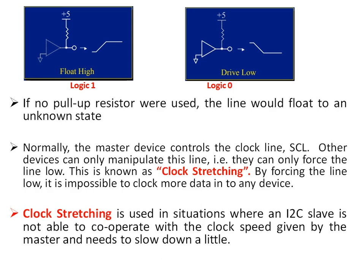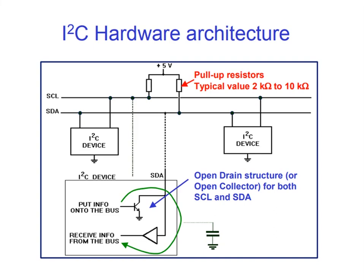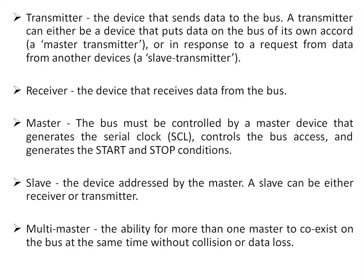Each device has SDA and SCL pins, and each pin has an open collector switch and a receiver buffer, depending on whether it is acting as a transmitter or receiver. A transmitter is the device that sends data onto the bus. A transmitter can either be a device that puts data onto the bus on its own accord — that is a master transmitter — or in response to the master, so slaves also act as transmitters.